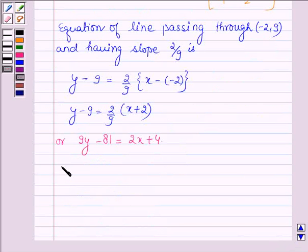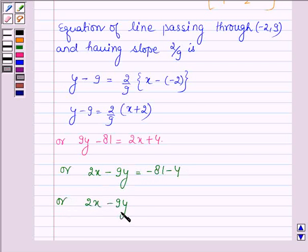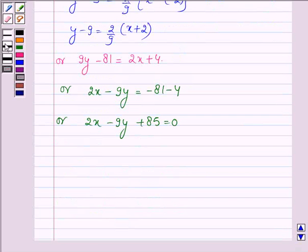Or we have 2x - 9y + 85 = 0. Therefore equation of the required line P2 is 2x - 9y + 85 = 0.